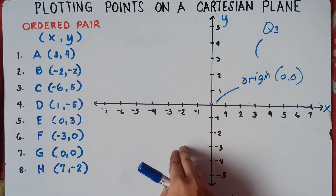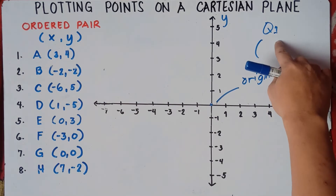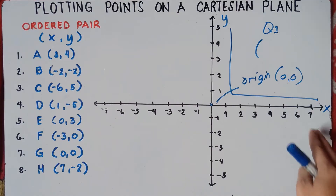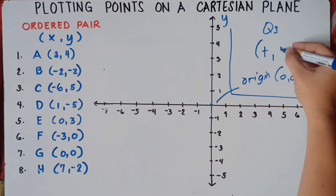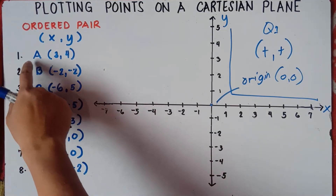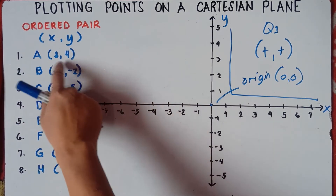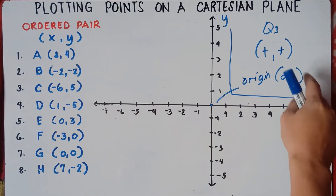You will plot points starting at the x-axis, then y. For quadrant one, x is positive and y is also positive. So if you know it's quadrant one and memorize the signs, you already know quadrant one is positive, positive. Therefore for point A (3, 4) — x is 3, y is 4 — all positive numbers means you will plot these points in quadrant one.